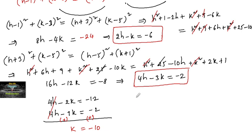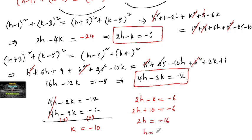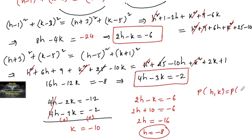Substituting k = −10 into equation one: 2h − (−10) = −6, so 2h + 10 = −6, giving 2h = −16, and therefore h = −8. So point P is (−8, −10). The question asks for the length Pa.